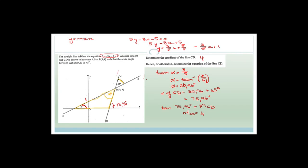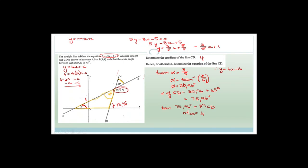Now it says: hence or otherwise determine the equation of line CD. The line passes through (0.5, 4), so y = 4x + c. Substituting: 4 = 4(5) + c, so c = 4 minus 20 = minus 16. Therefore, the equation of CD is y = 4x minus 16. This makes sense — it's a very steep positive graph cutting at minus 16.